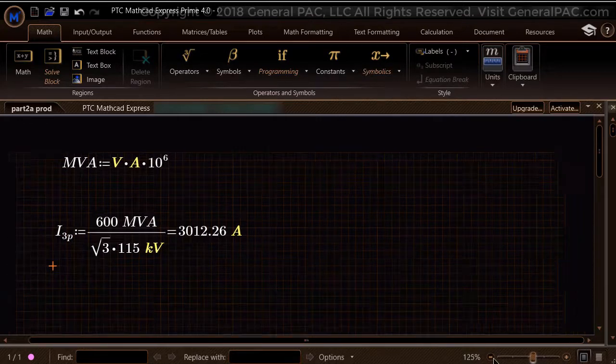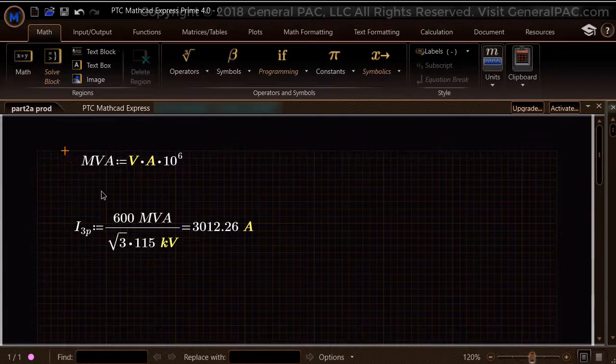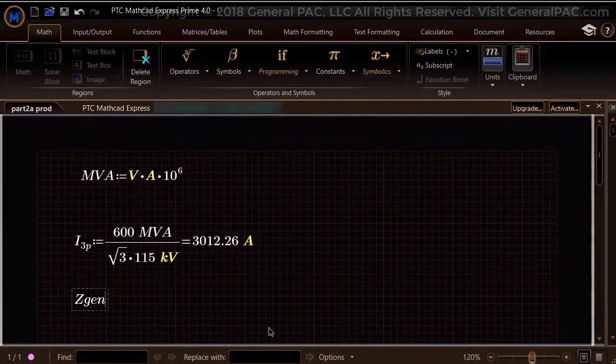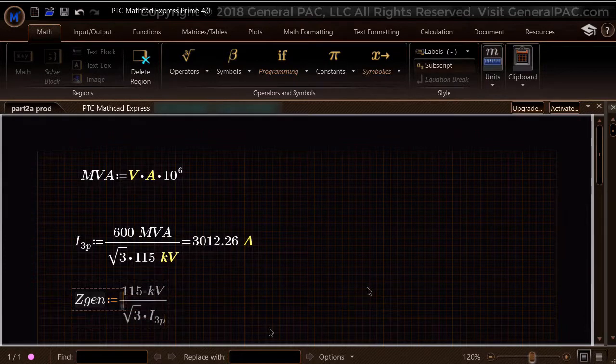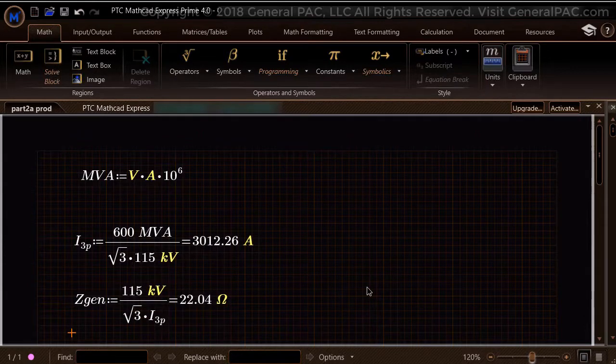We can now calculate the impedance value by dividing the voltage over the current, times the square root of 3. The square root of 3 must be accounted for because it converts the voltage to a line to ground quantity from the given 115 kV line to line quantity. The impedance value is calculated as 22.04 ohms.